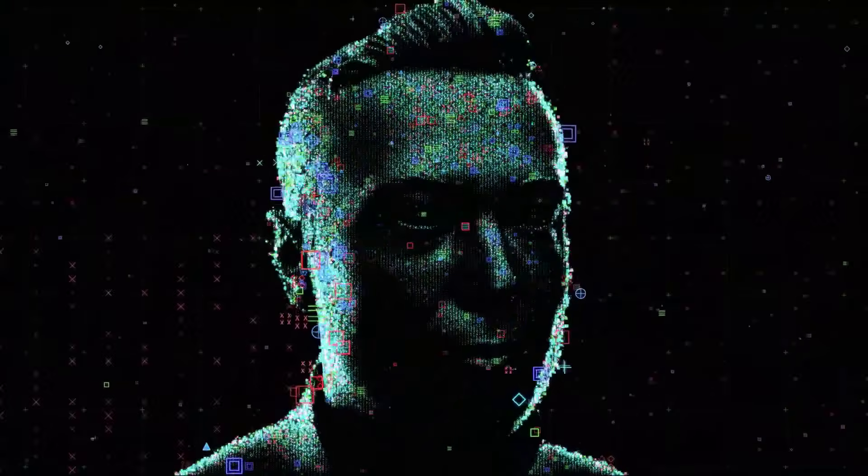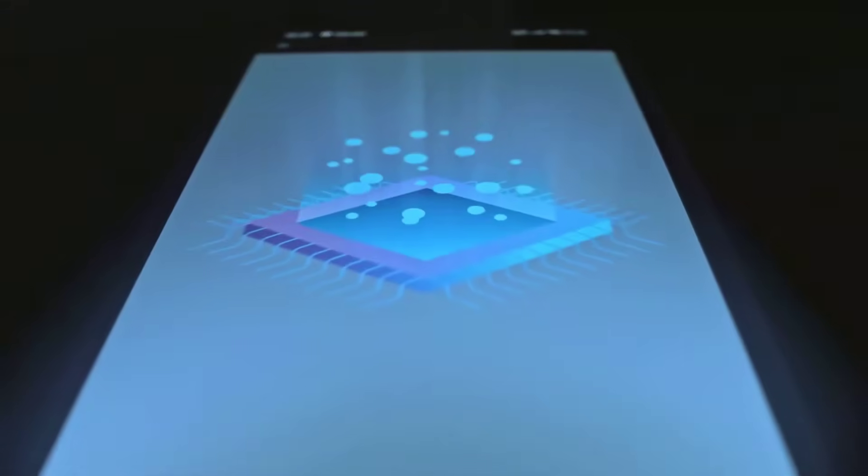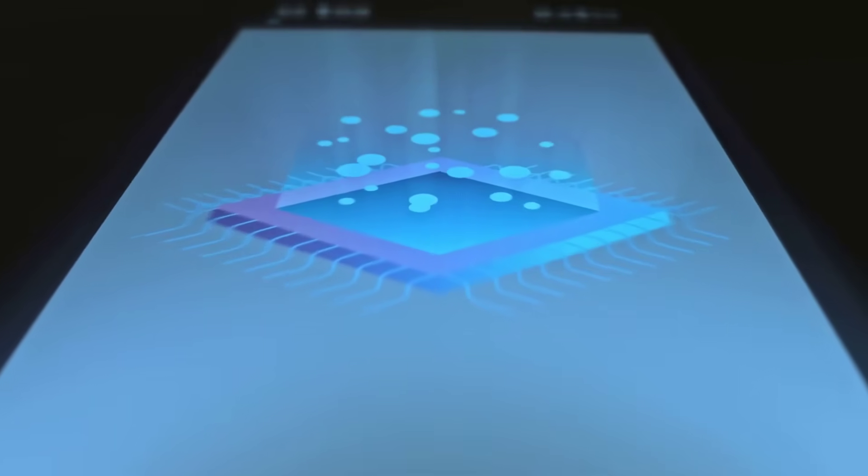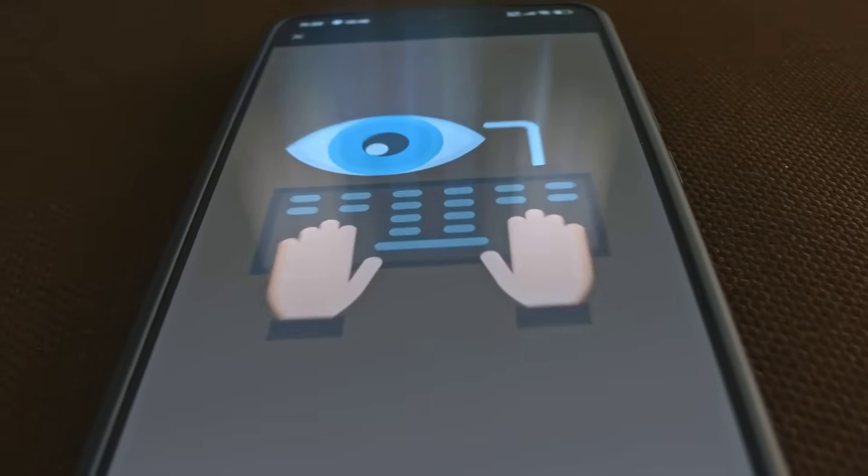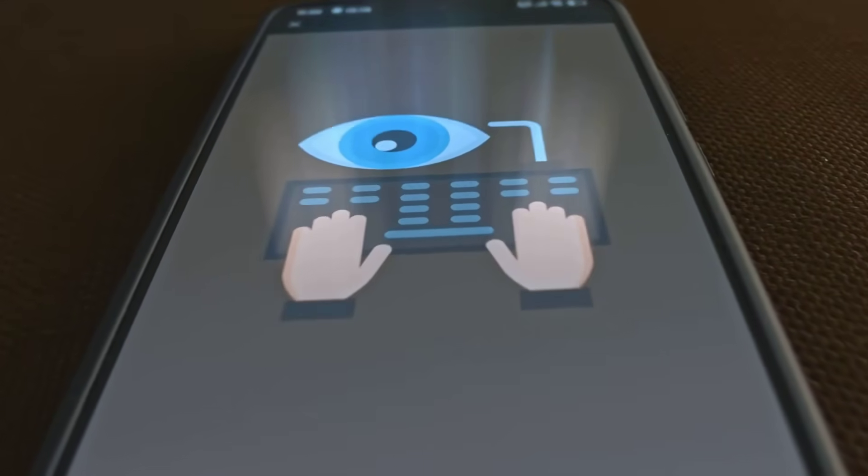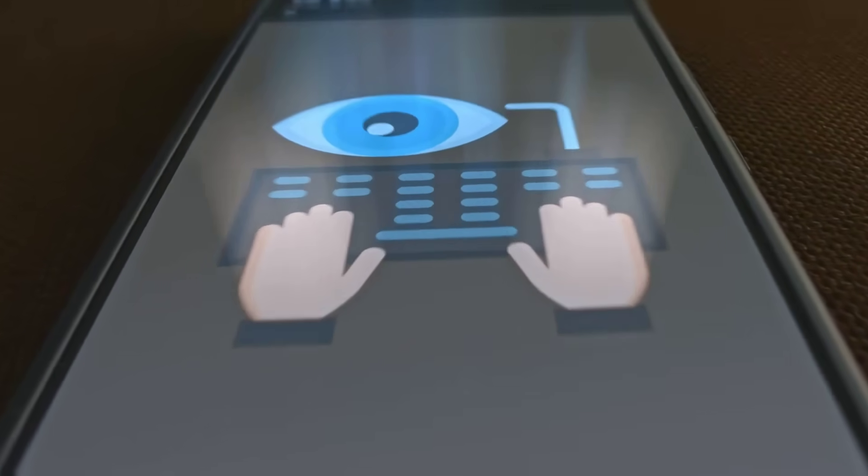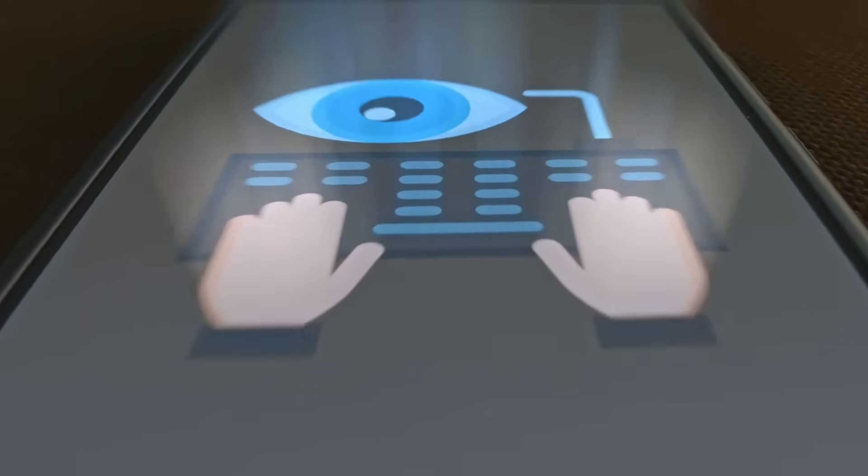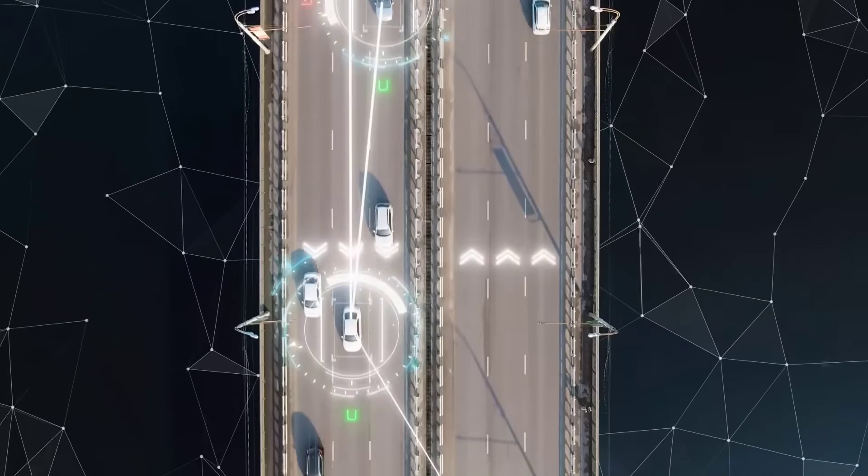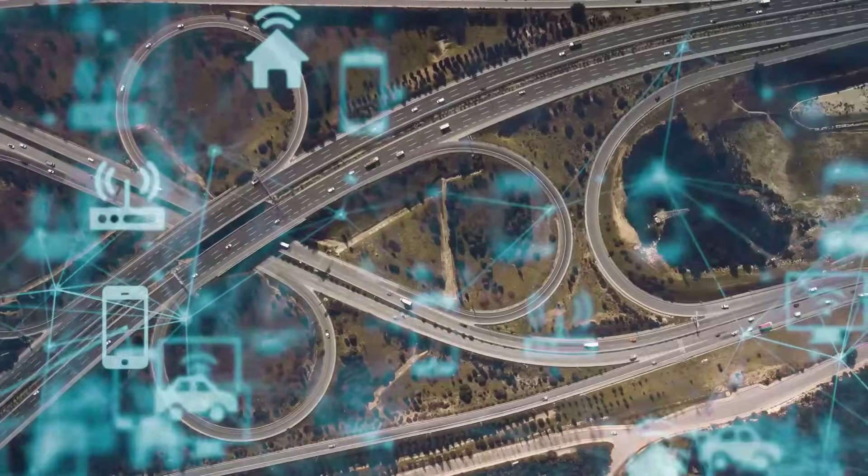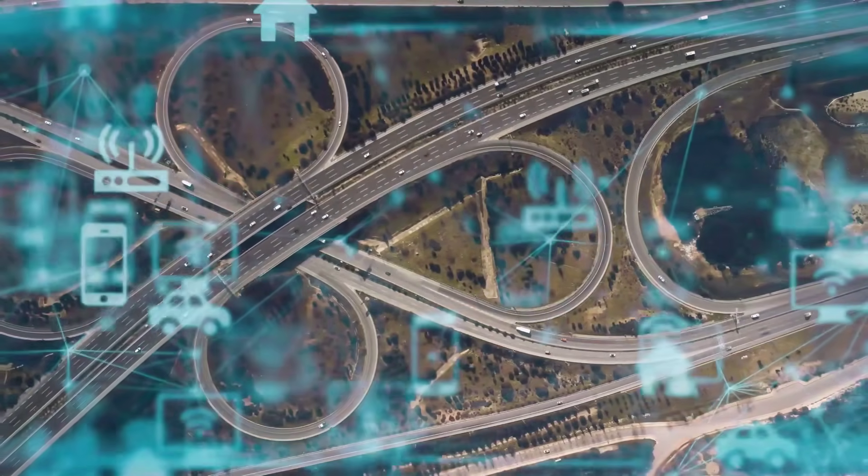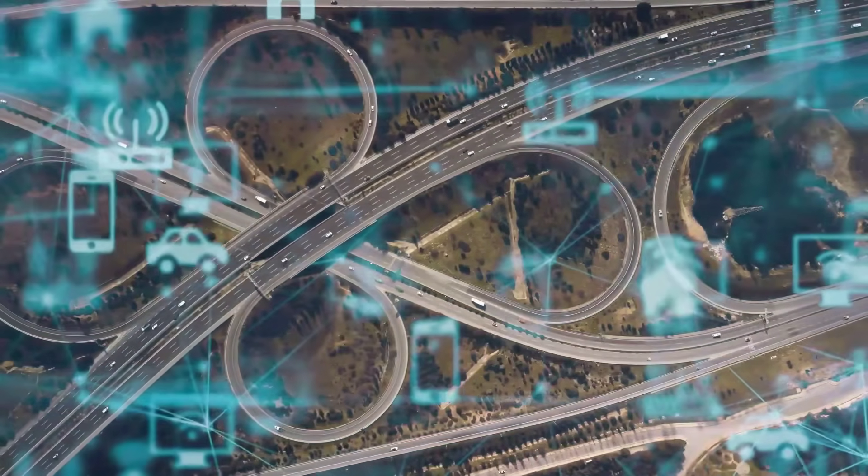Example number one. Smartphones. Imagine your next phone has a digital processor for apps and an analogue AI chip for the camera. The analogue chip processes images in real time, using almost no battery, while the digital chip handles the complex editing. Example number two. Self-driving cars. Analogue sensors process visual data instantly, spotting pedestrians and obstacles. Digital AI makes the complex decisions about navigation and route planning.